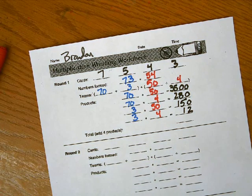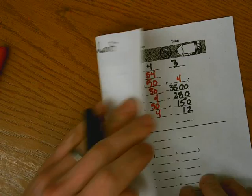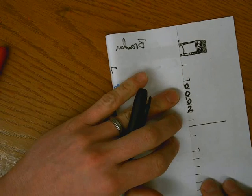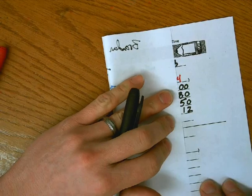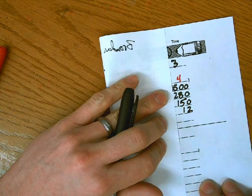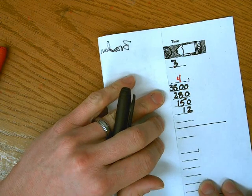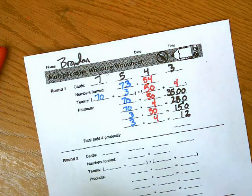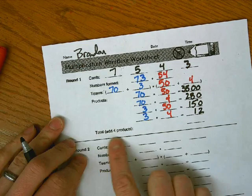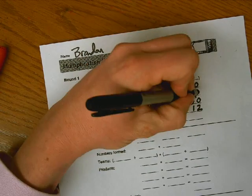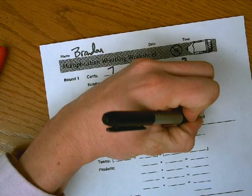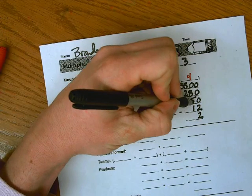Another thing I want you to notice, and this will just help you along the way, is you notice my ones places lined up, and my tens places lined up, and hundreds and thousands if you have them. Okay, so they're all lined up. It makes it really easy. And here it says total. Add the four products. So zero plus zero plus zero plus two is two. Zero plus eight plus five plus one. Well, five plus one is six, and eight plus six is 14.